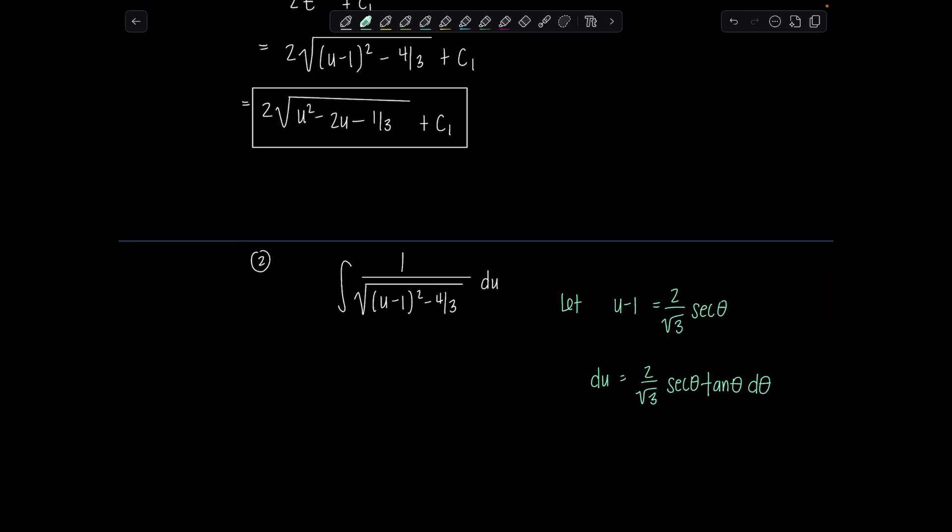So here we go. Let's rewrite this integral now in terms of theta. So this du is all of this 2 over rad 3 secant theta tan theta d theta over, and then I have square root. u minus 1 squared is 2 over rad 3 secant theta quantity squared. So it's going to be 4 thirds secant squared theta, 4 thirds secant squared theta minus that 4 thirds.